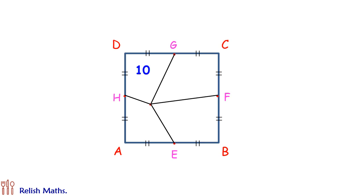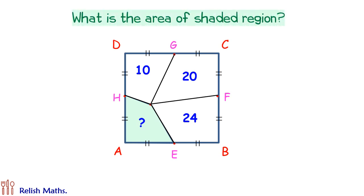The area of three parts is given as 10 cm², 20 cm², and 24 cm². Using this information, we have to find the area of the fourth part. That's the area of the shaded region.